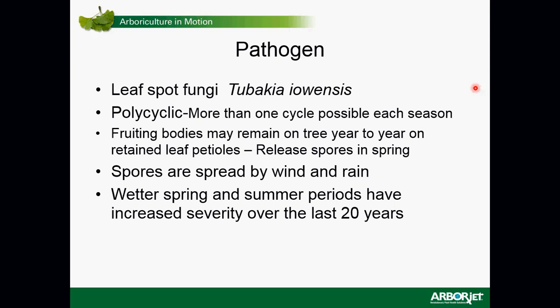The disease gets progressively worse because it has created an ability to prevent leaf senescence — it prevents the leaves from falling off. The fruiting bodies can be on that leaf petiole, and even if the leaf blows off, the old petiole is right next to expanding leaves. The spores are also spread by wind and rain splashing. One reason this disease seems increasingly prevalent is that we've noticed more rainfall in the Midwest over the last 20 years.